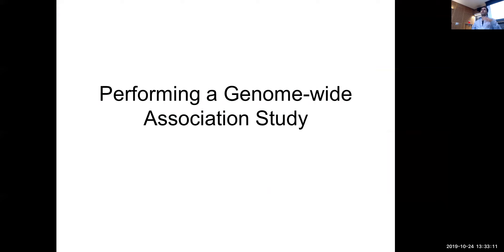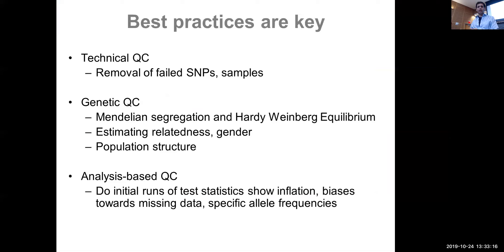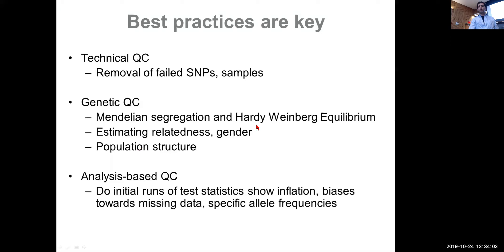Once you have cases, controls, and every SNP measured, you need quality control. First, technical QC: remove failed SNPs or failed samples. Then genetic QC: look for Mendelian segregation, Hardy-Weinberg equilibrium, estimate relatedness. Identity by descent means individuals share the same variant because they are related — you don't want to count those the same as two unrelated individuals because it messes up your statistics. Check gender effects where the X or Y chromosome might regulate the expressivity or penetrance of a particular trait.